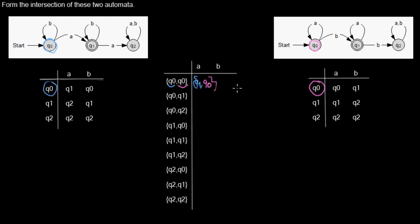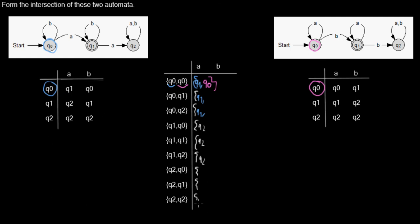That's how we fill out the whole transition table. We always start in Q0 and read an A, so we always move into Q1 in the left automaton. From Q1 with an A in the left automaton we move to Q1. From Q2 in the left automaton with an A we also go to Q2 — so Q2, Q2, Q2.